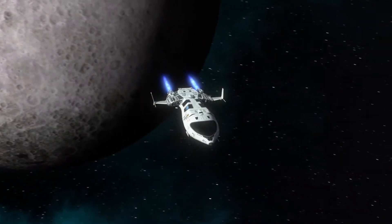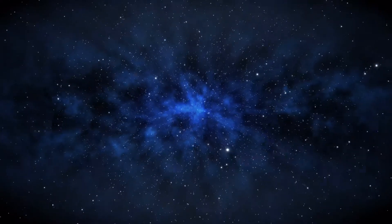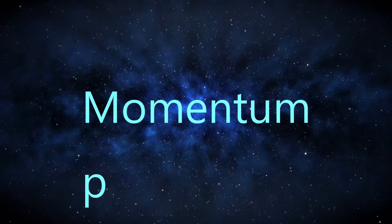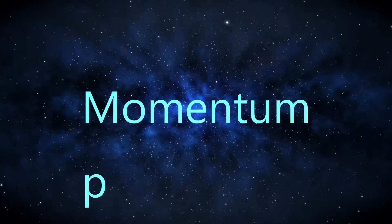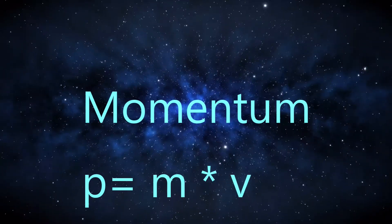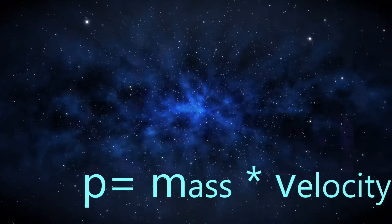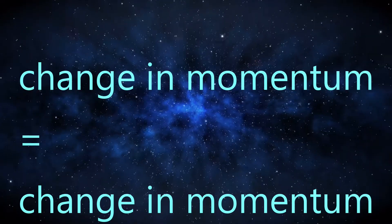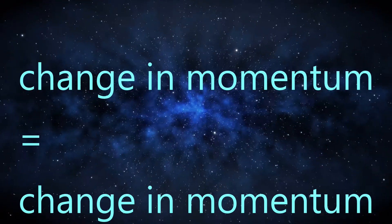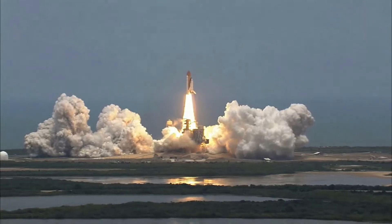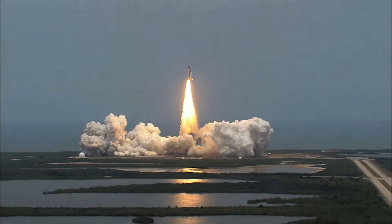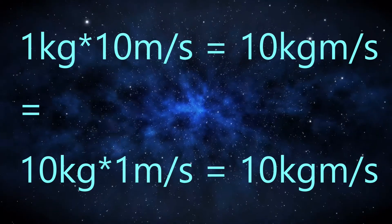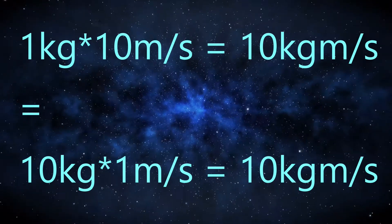Now let's look at the equations that describe momentum. The symbol used to depict momentum is traditionally the letter P. The equation that describes momentum is P equals M times V — so momentum equals mass times velocity. The change in momentum for your rocket will be equal to the change in momentum for your propellant, factoring in that your ship is losing mass and getting lighter as it expels exhaust. Delta P equals delta P. One kilogram times ten meters per second would equal ten kilograms times one meter per second, in the opposite direction, of course.